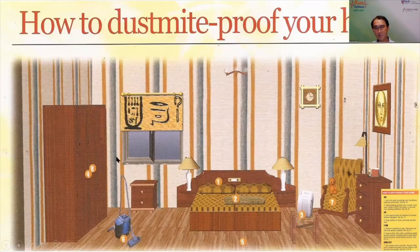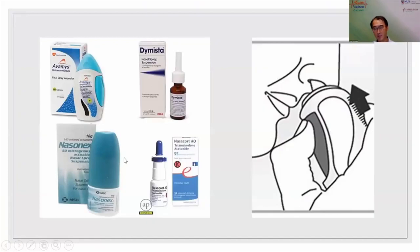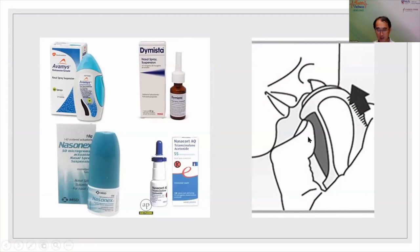Nasal steroid sprays are one of the most effective ways to treat allergic rhinitis. The amount of steroid absorbed into the body is very little, making them safe for long-term use. The proper technique is to tilt the head looking down at the floor, point the bottle upwards, and administer the spray into the nose.